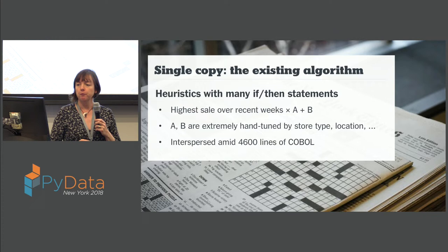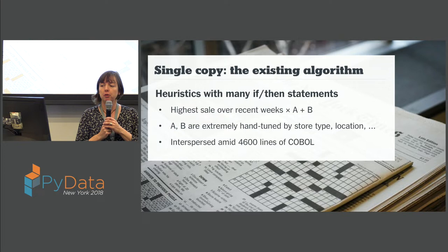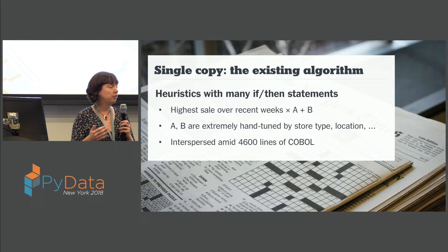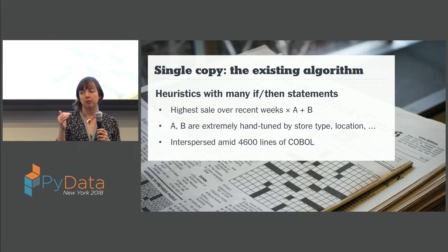This is a problem that has existed at the time in any newspaper and probably many other types of companies for a really long time, so we're not starting from scratch here — we're replacing an existing algorithm. But the existing algorithm is very heuristics-based and very manually tuned. Roughly what it has been doing is taking, for a store, the highest sales from recent weeks in that store, then multiplying it by a number A — which is probably a little bit more than one — and then adding a number B, which might be a copy or a few copies. And then that's the number of newspapers you want to send next week.